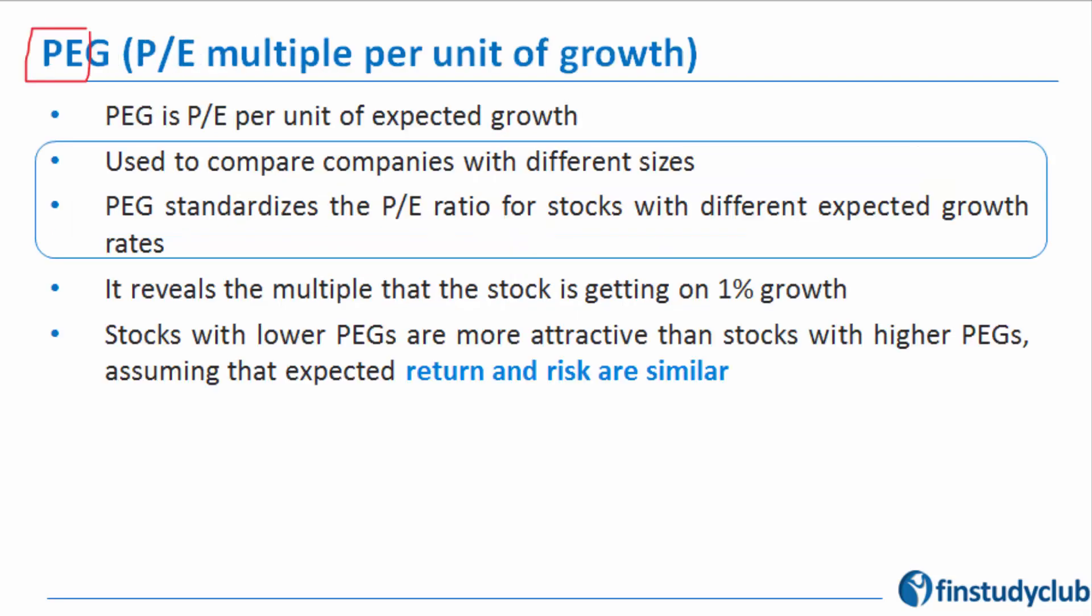Let us go back to where we started. PEG is the PE—1.6 times per unit, I'm talking about the fundamentals of A—per 1% of expected growth. It's used to compare companies with different sizes and different growth rates.